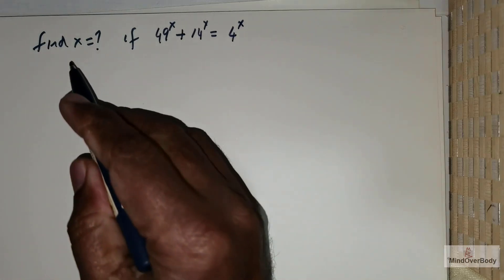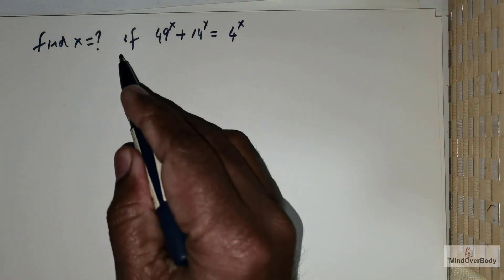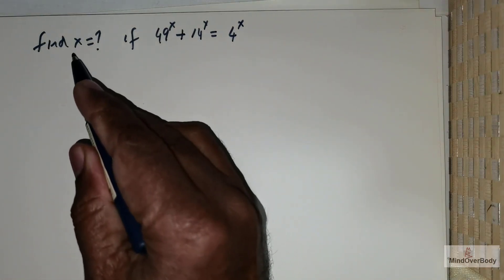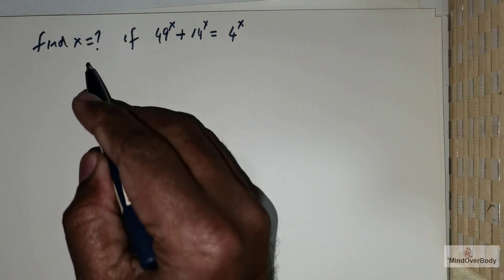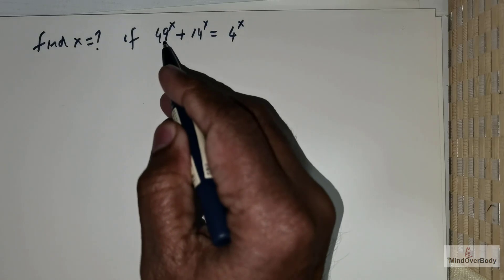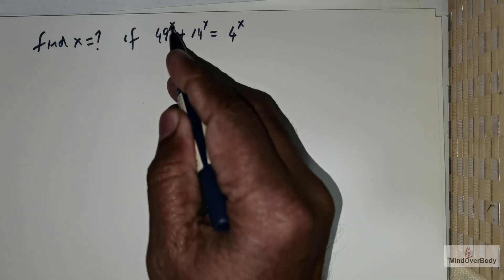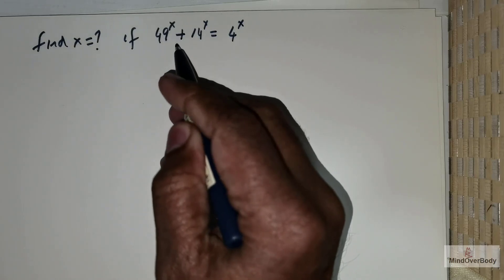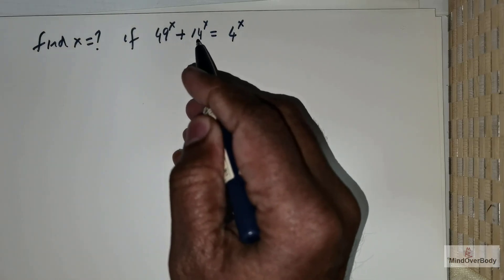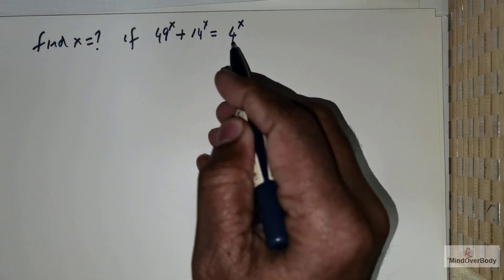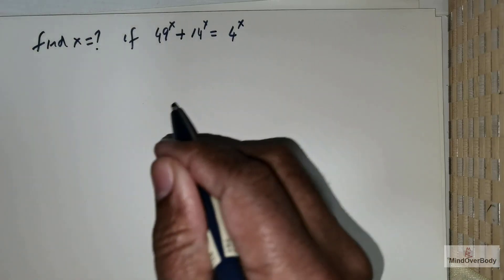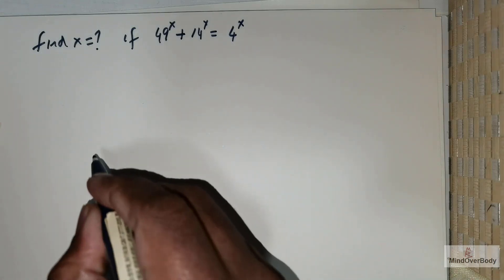Welcome students. In this question, we are asked to find the value of x given that 49 raised to the power x plus 14 raised to the power x is equal to 4 raised to the power x.